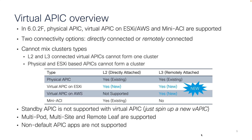You still have the choice of deploying physical APICs like we always have — that's not going away — but now we're adding a couple of other choices: virtual APICs on ESXi, or virtual APICs within a public cloud like AWS. I already mentioned the two choices between directly connected and remotely connected. Something important to keep in mind: you cannot mix cluster types. You're either going to go all physical or all virtual — you can't mix. This is a greenfield type deployment. Similarly, you can't mix layer 2 attached versus layer 3 — you're going to be all of one or all of the other.